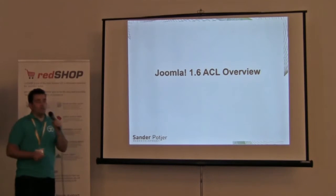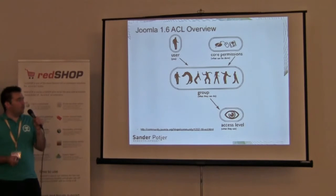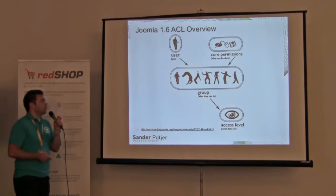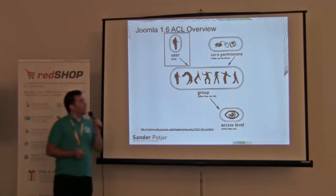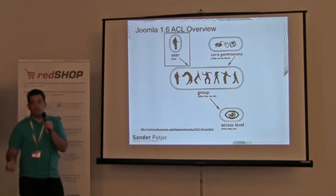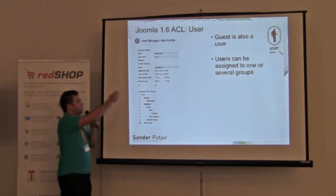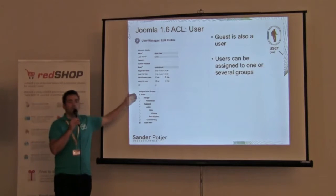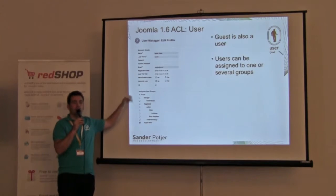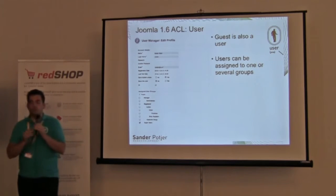An overview of the 1.6 ACL: we're talking about four important parts. First, the user. In 1.5, you were assigned to one group via a dropdown. Now in 1.6, we can assign a user to multiple user groups — as many as we want.